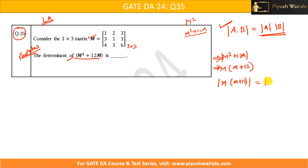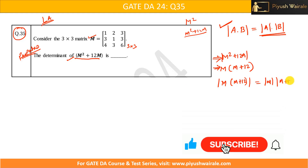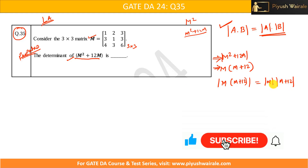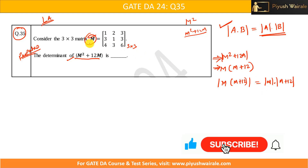Applying the determinant property, the determinant of M times (M plus 12I) equals the determinant of M multiplied by the determinant of (M plus 12I). But first, we need to find the determinant of M.